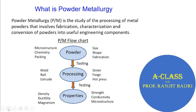When we say powder metallurgy, as mentioned in the introduction, it is a whole manufacturing process which can be used to make products and components. Powder metallurgy can be defined as the study of the processing of metal powders that involves fabrication, characterization, and conversion of powders into useful engineering components. You start with the powder and end up with a final product through certain processing steps.